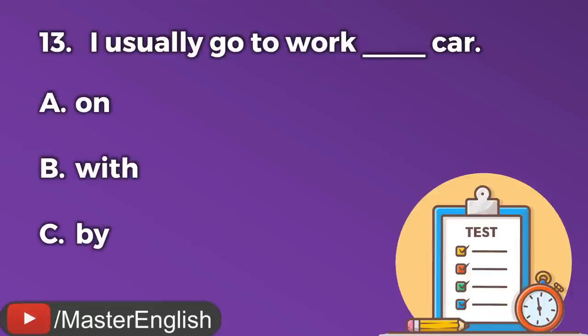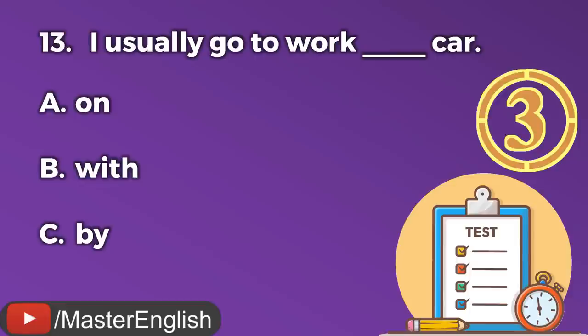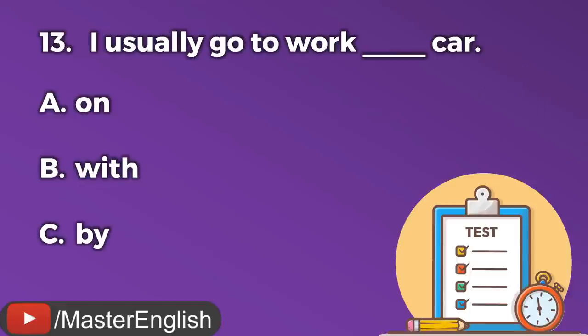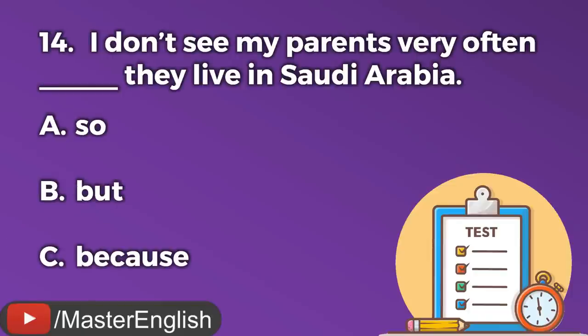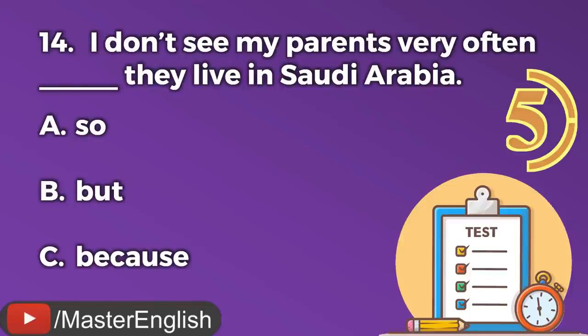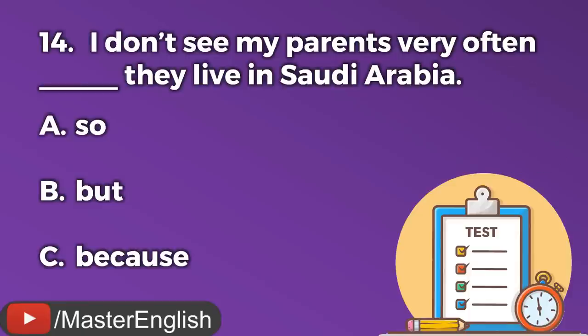Question number thirteen. I usually go to work ___ car. A: On. B: With. C: By. The correct answer is C: By. I usually go to work by car. Question number fourteen. I don't see my parents very often. They live in Saudi Arabia. A: A. B: But. C: Because. The correct answer is C: Because — I don't see my parents very often because they live in Saudi Arabia.